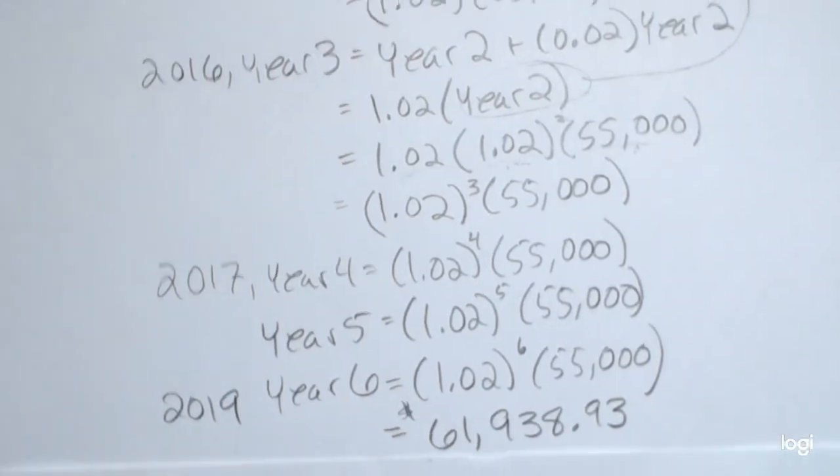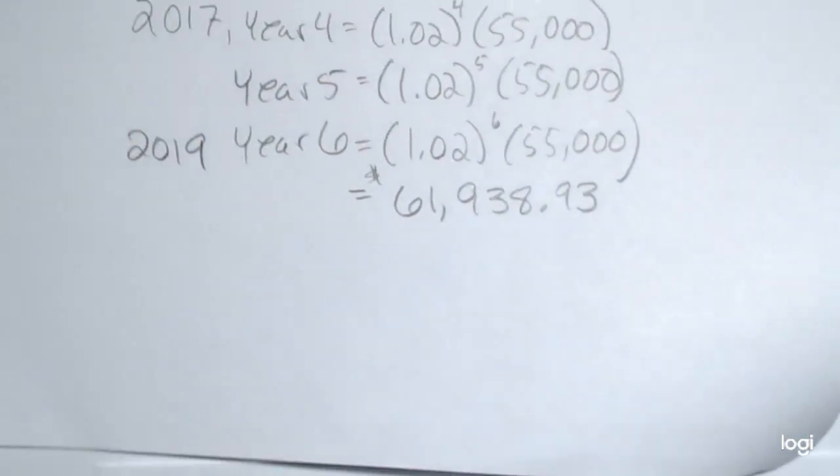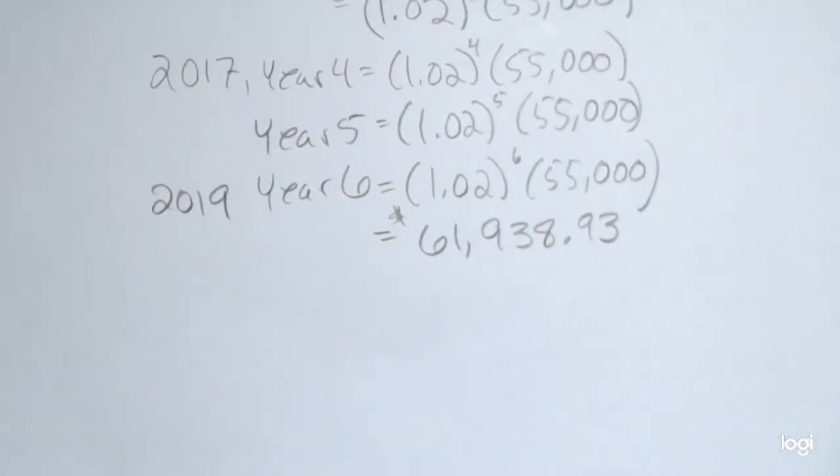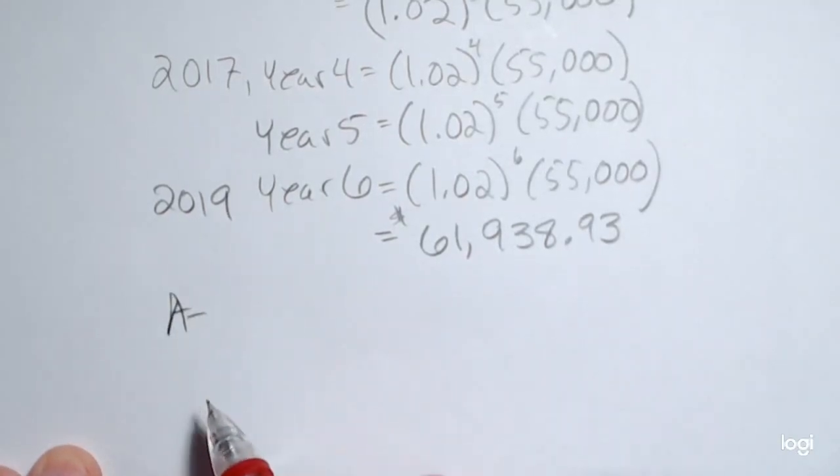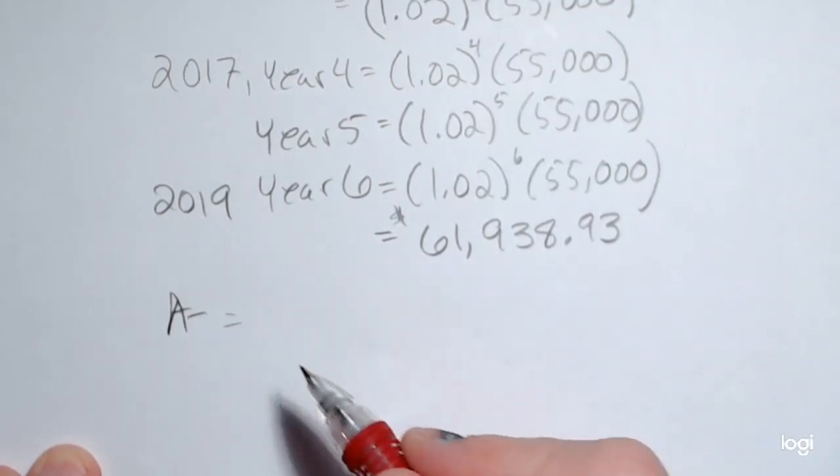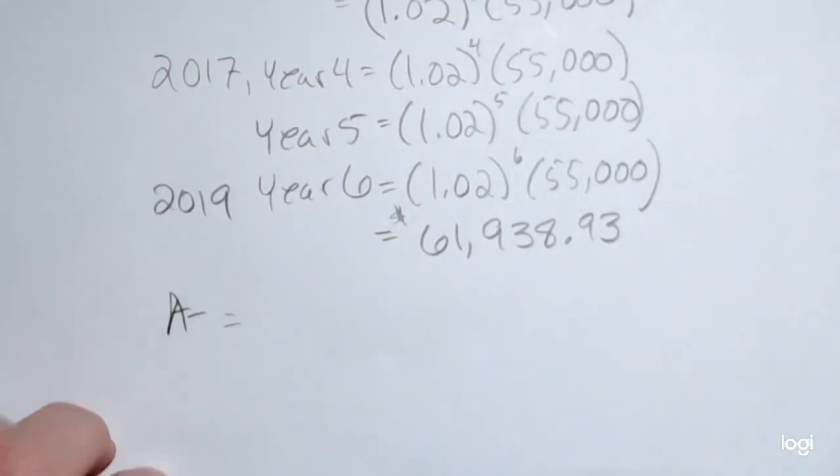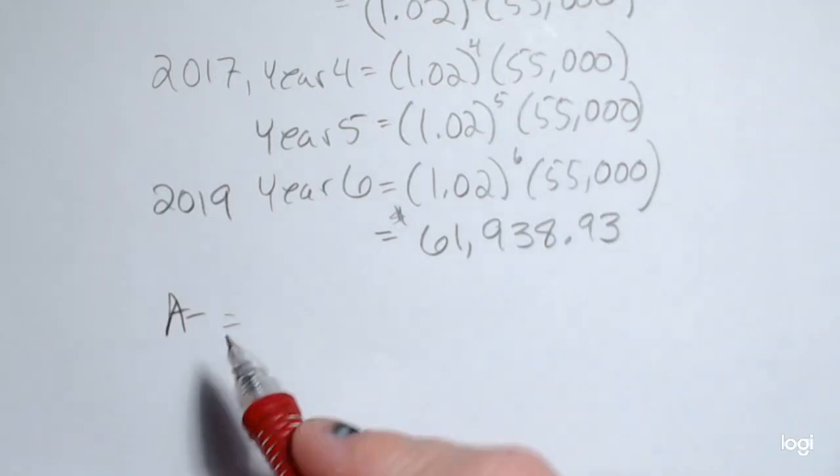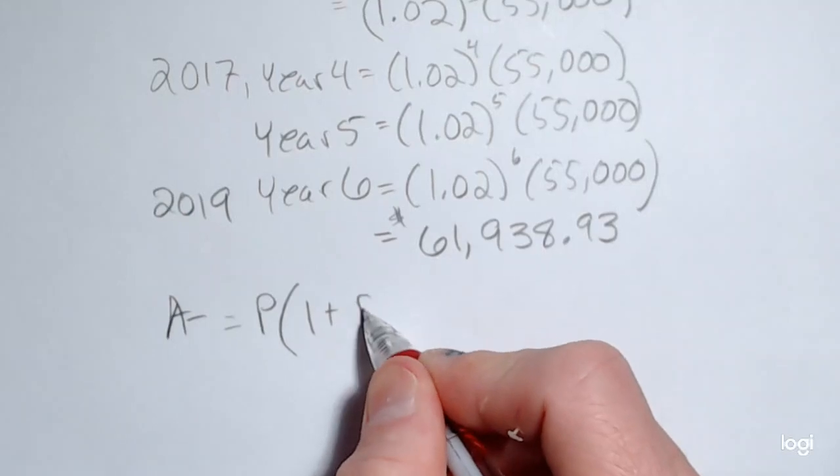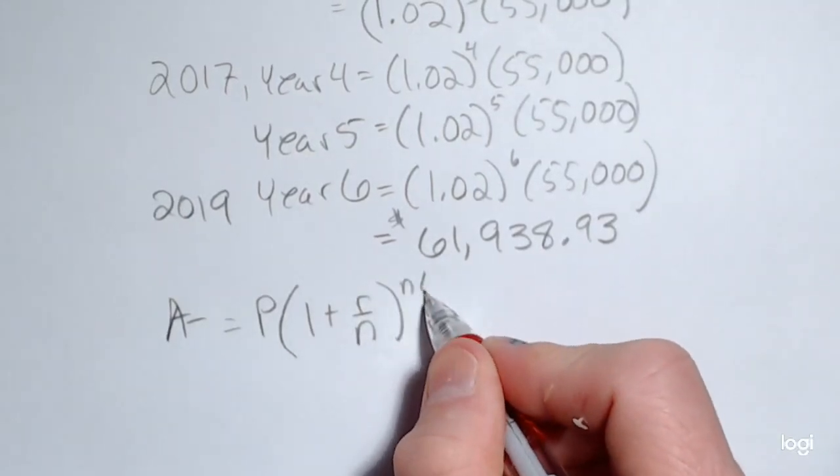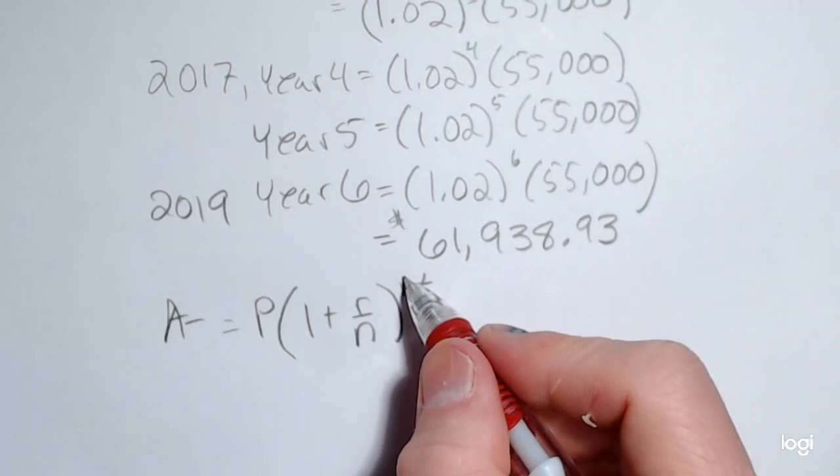Now again, you can think of this as a compound interest type of situation. The compound interest formula, future value for compound interest, is A equals—the principal amount times 1 plus r over n raised to the n times t power.